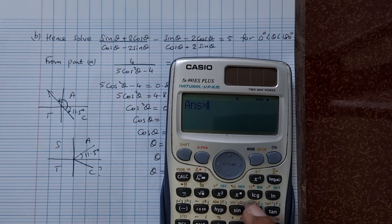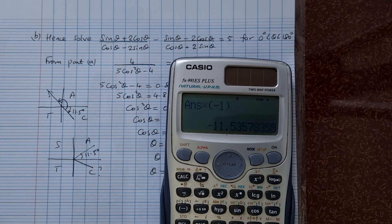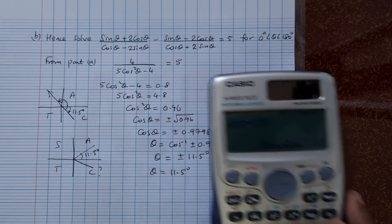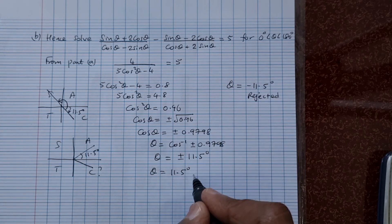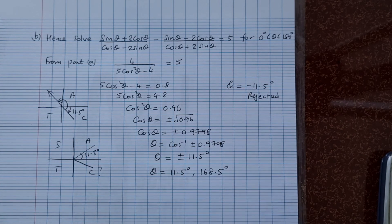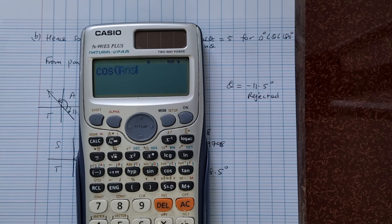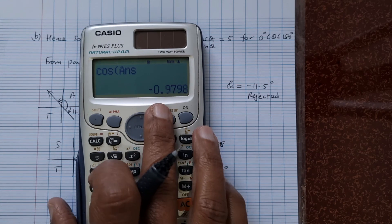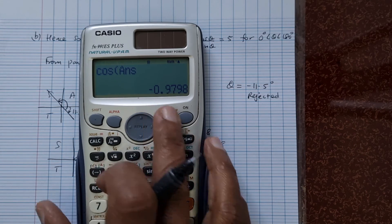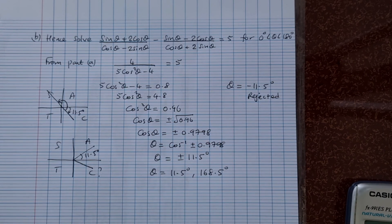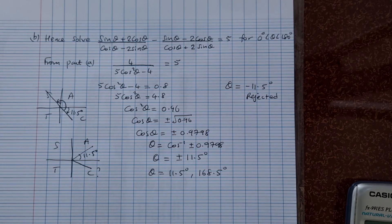So, add on 180 and you get 168.5. So, the next angle is 168.5 degrees. And, of course, we can check this out by putting cos there. And this is what we get. So, minus 0.9798. So, this is excellent. So, these are the two values for our solutions. And here we are. Take care.